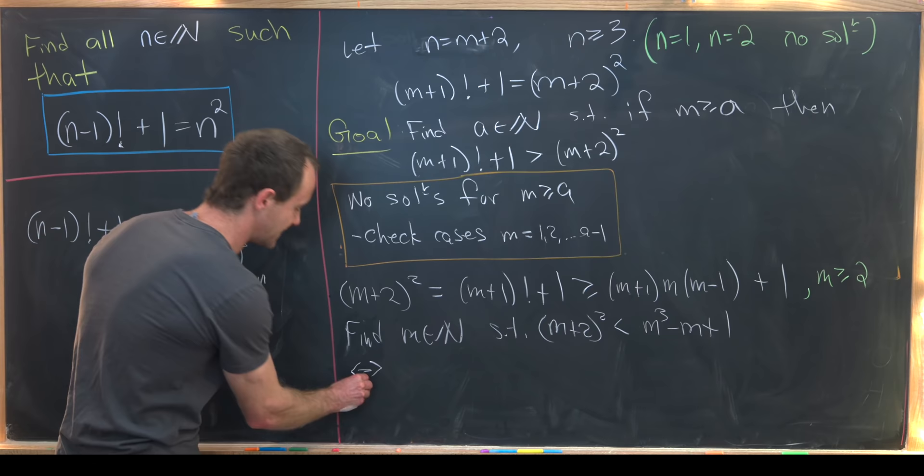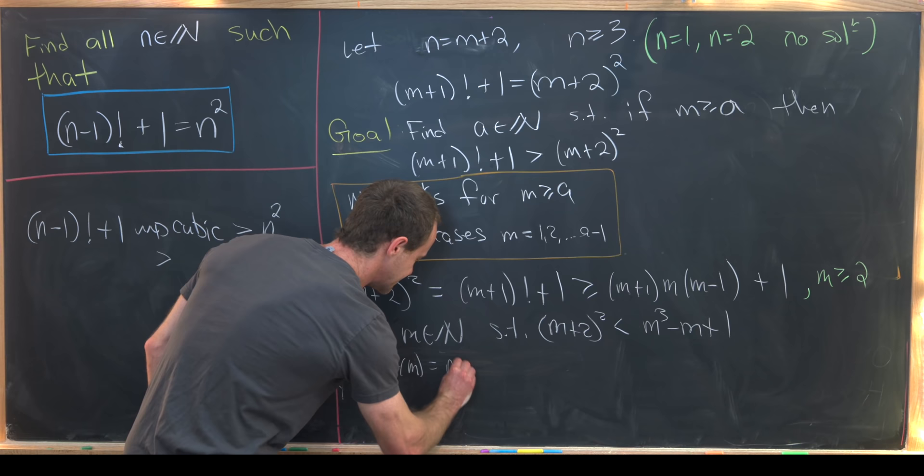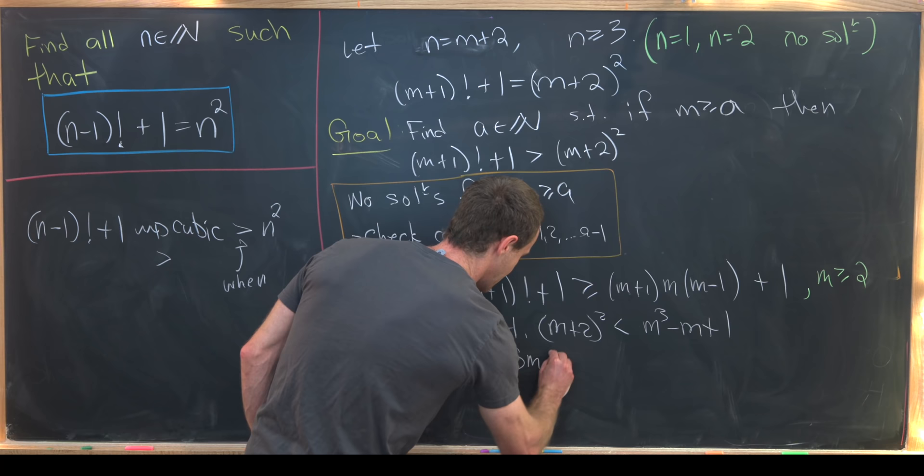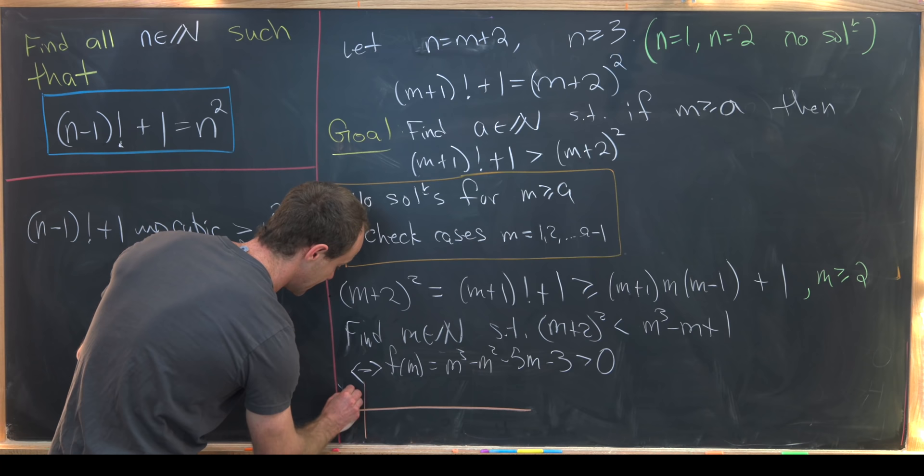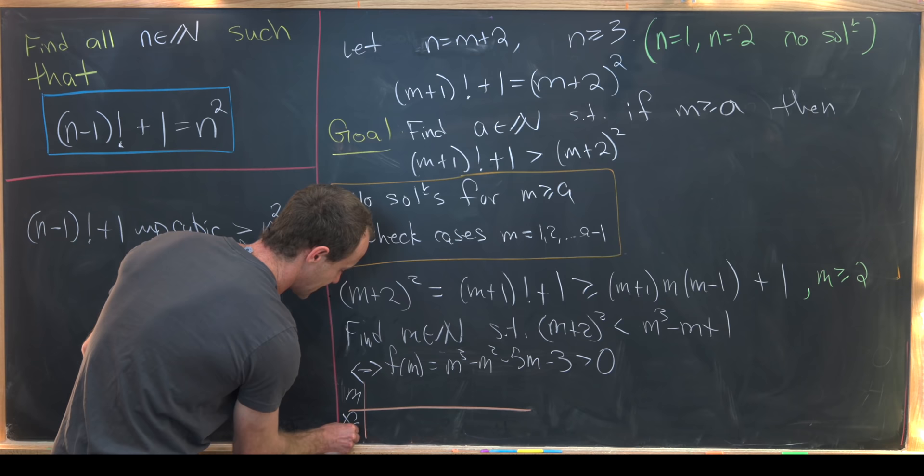So multiplying this out and moving some things around we see that this reduces to something which I'll call f of m which is m cubed minus m squared minus 5m minus 3 being bigger than 0. So we want to find the values of m where this occurs. Well let's make a little chart of this situation so we can get an idea for what's going on.